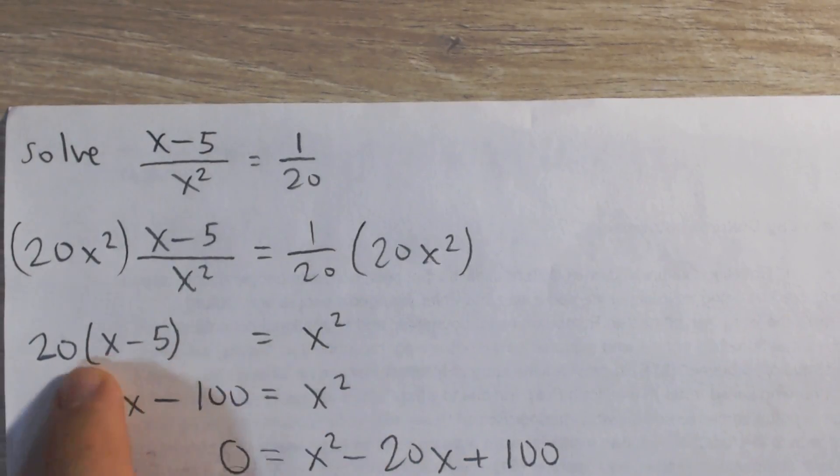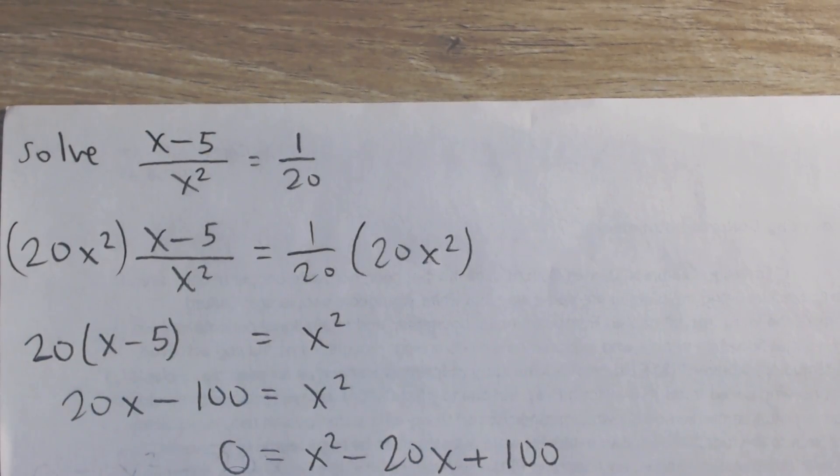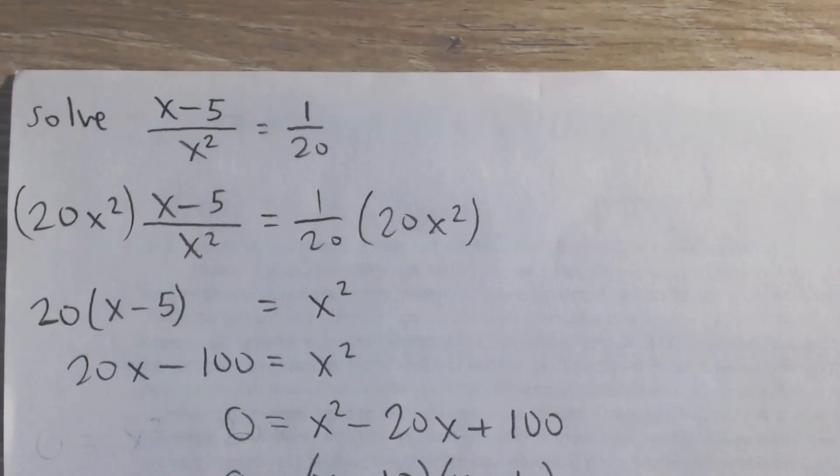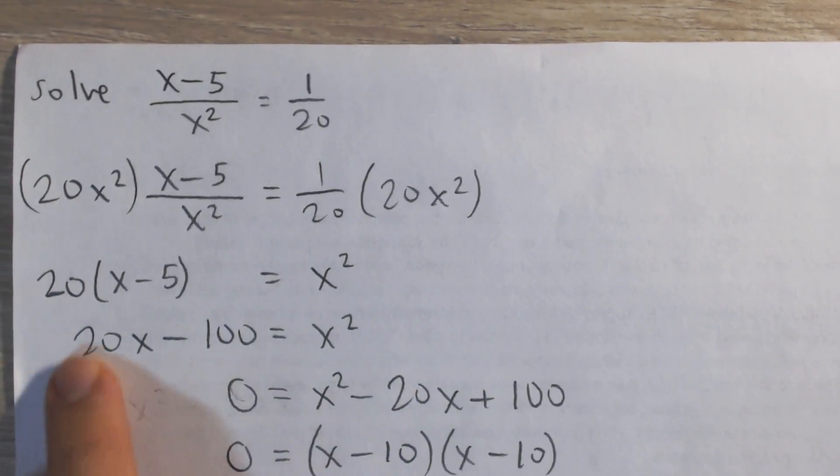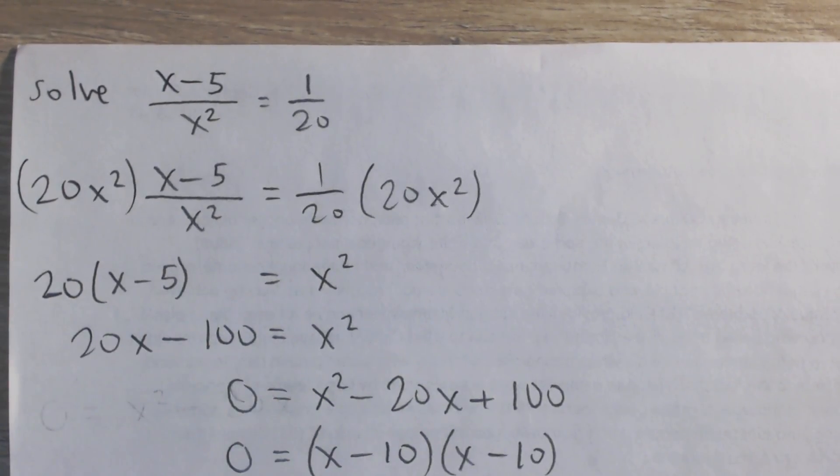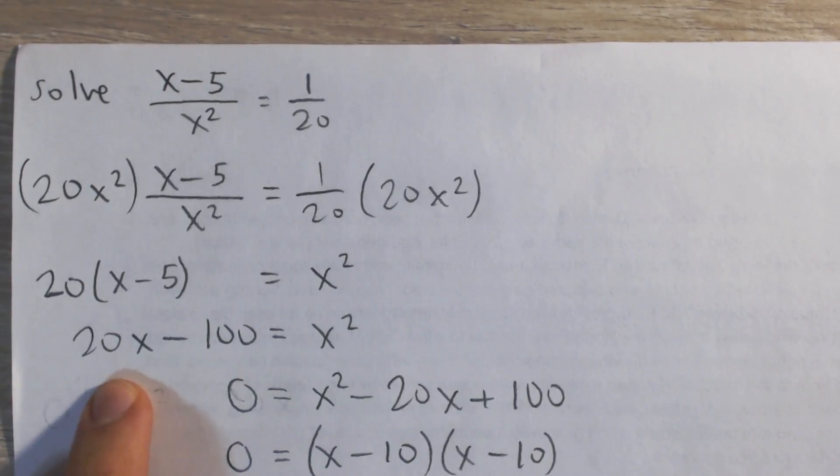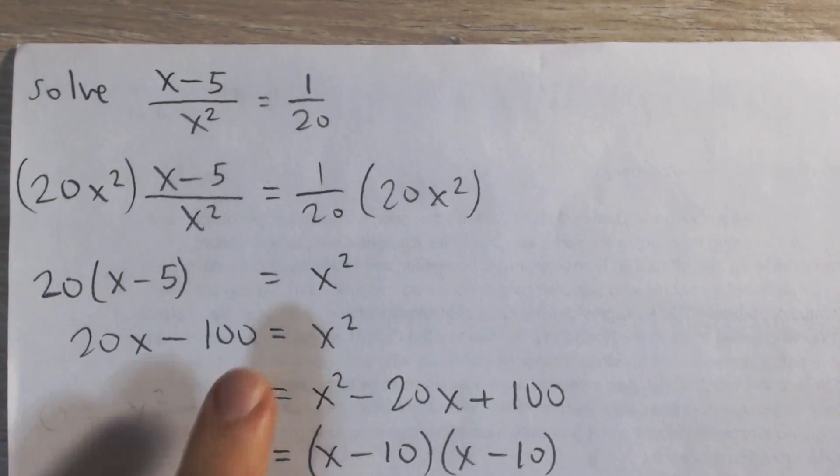And you can see that's how we got to this line, 20 times x minus 5 equals x squared. It's kind of a little shortcut. Then let's distribute the left side. We have 20 times x, which is 20x, and 20 times negative 5, which is negative 100, is equal to x squared.